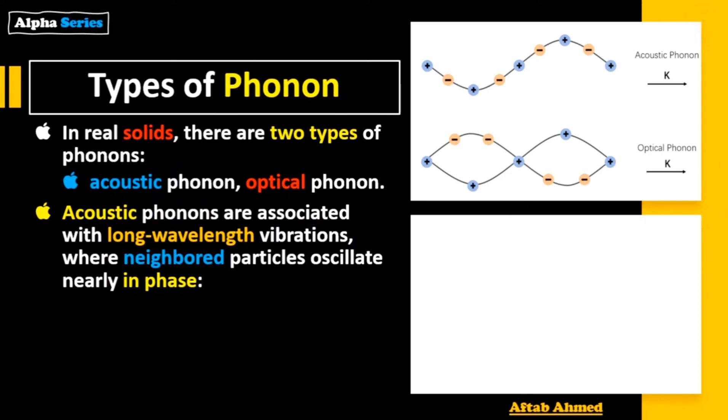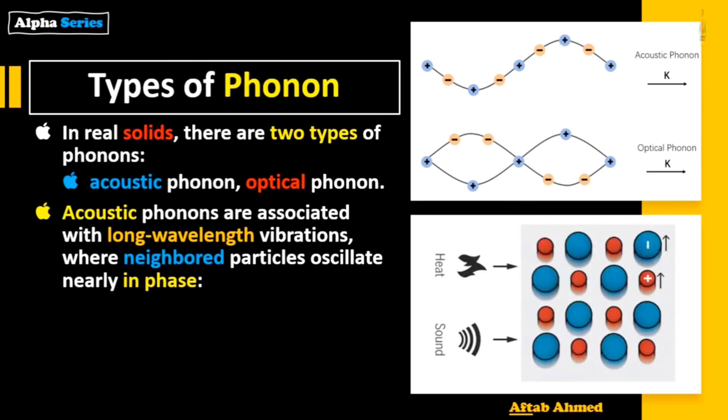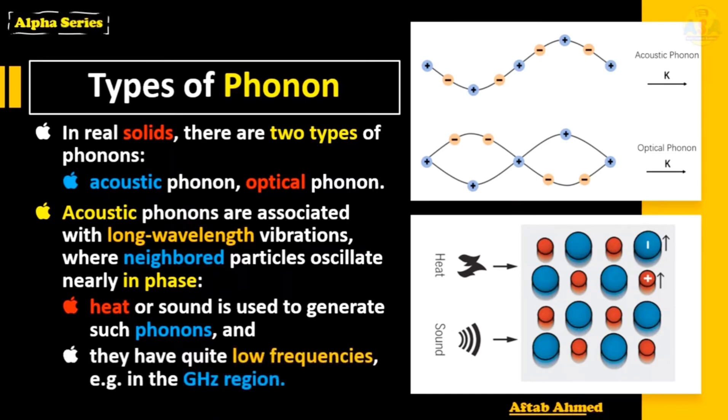That means they have long wavelength vibrations and their neighbor particles oscillate in phase. Heat or sound is used to generate such phonons and they have relatively low frequencies because their wavelengths are high and they fall in gigahertz region.